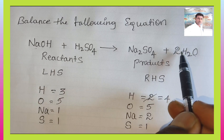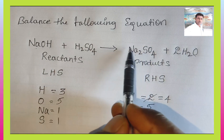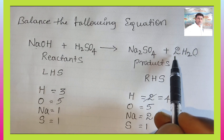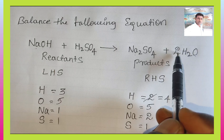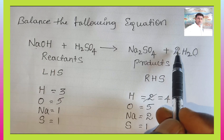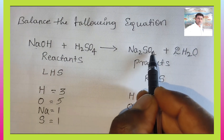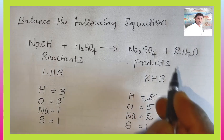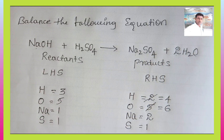When balancing the equation, the number must be written in front of the compound — this is called the stoichiometric coefficient. Always write the balancing number in the stoichiometric coefficient place. Now with the updated coefficient: water contributes 2 oxygen, plus Na2SO4 contributes 4 oxygen — total 6 oxygen atoms on the RHS. On the LHS there are still 5 oxygen atoms, so oxygen is now 6 on RHS versus 5 on LHS.